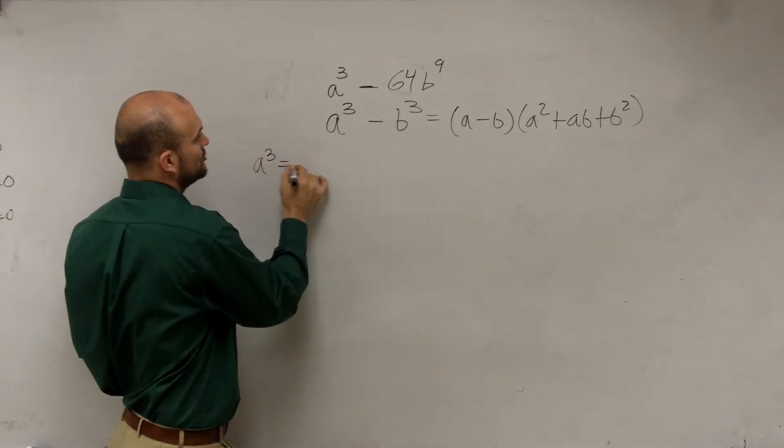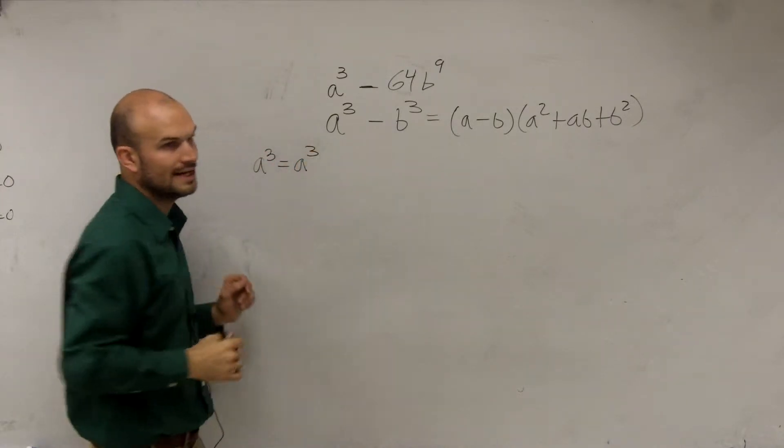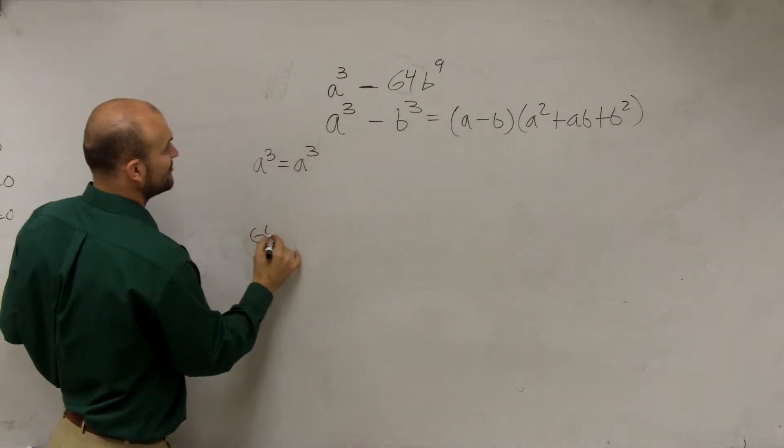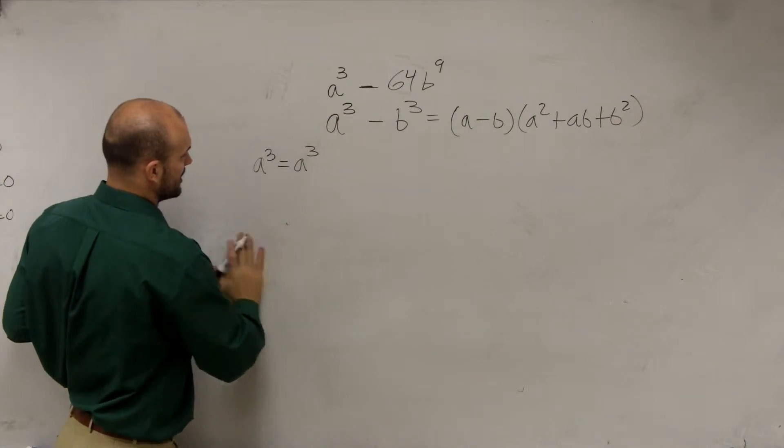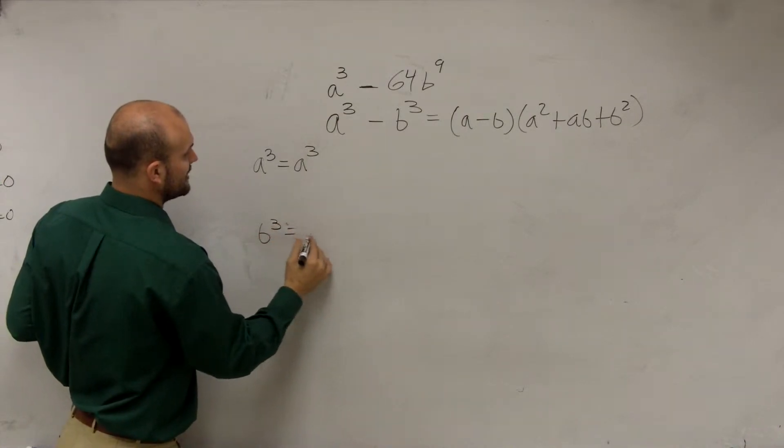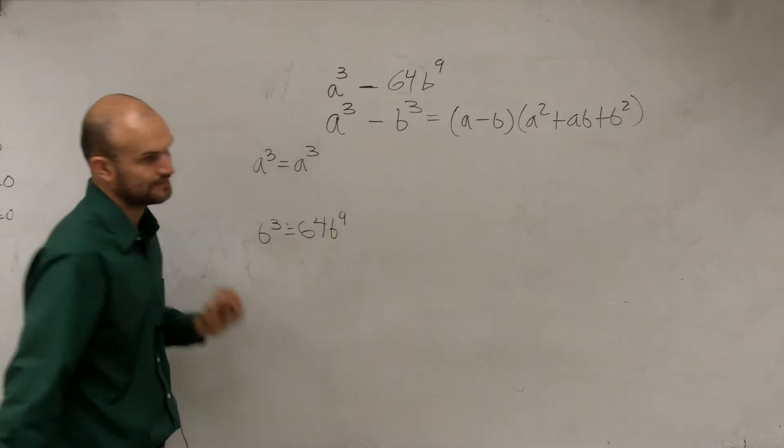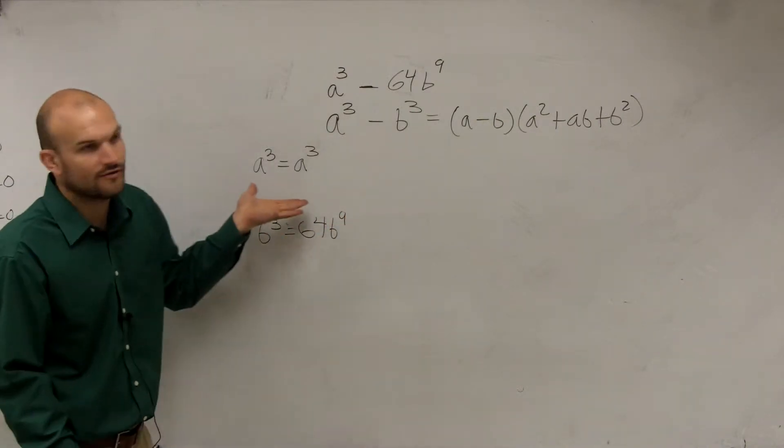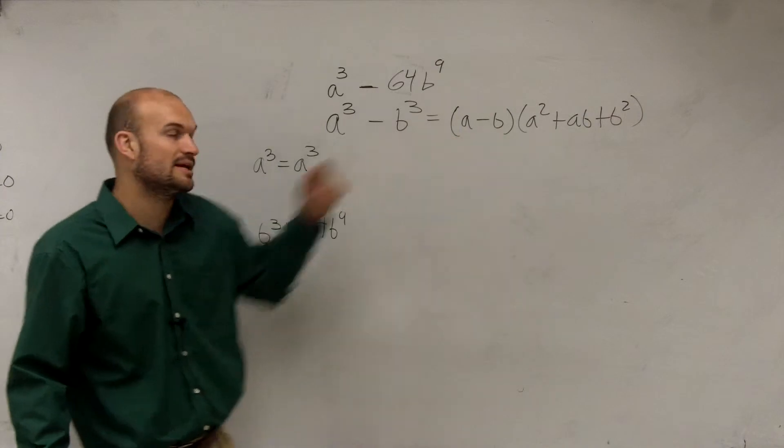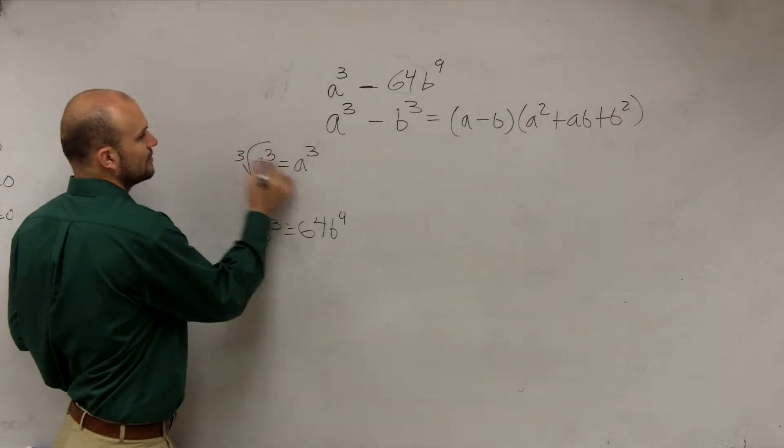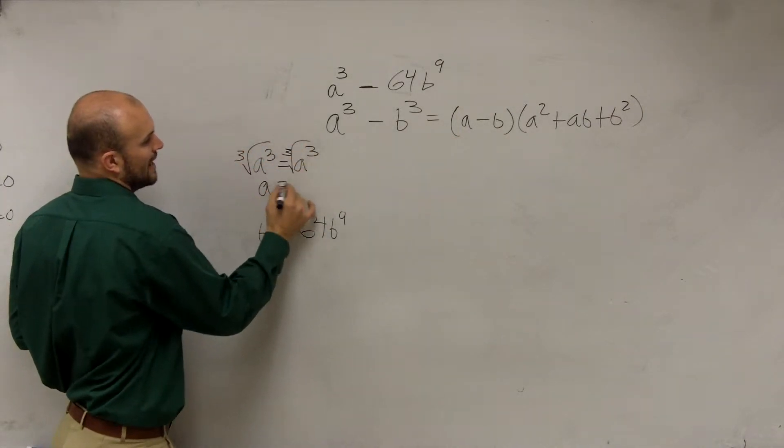So what I'm going to do is I need to say, can I write a cubed equal to an a cubed? And can I write b cubed equal to 64b to the ninth? To solve for a, we want to figure out what a and b are. I'm going to take the cube root of each side. Therefore, a equals a.